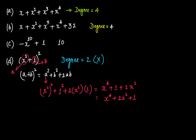Therefore x raised to the power of 4 is the term with the highest exponent of variable x, and the degree is 4. This is how you find the degree of a polynomial in one variable.